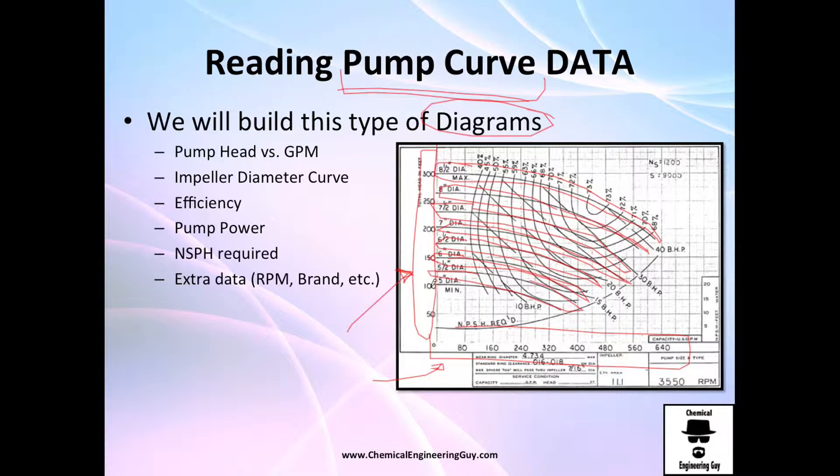We're going to study also efficiencies, how to find the best efficiency of a pump. We're going to find out that there is also the possibility to directly find out the power requirements and the NPSH requirement. And not only that, we have also data that is hidden, for example, at what velocity does this rotate, these 3550, the brands, capacity, many other materials of the pump that are included in the pump curve diagrams.